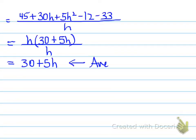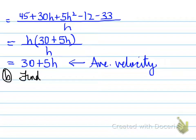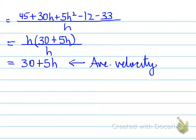Like terms are collected, and we find that the average velocity turns out to be 30 + 5h. So 30 + 5h is the simplified expression for the average velocity from t = 3 to t = 3 + h.